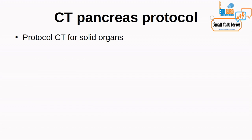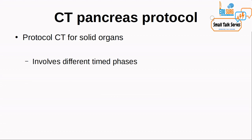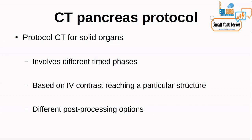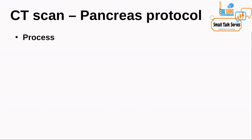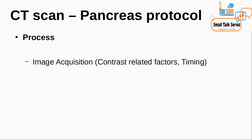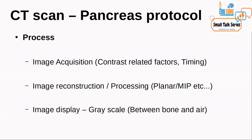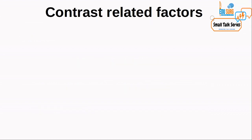When we say CT Pancreas Protocol, it is a protocol CT for solid organs. The basic principle is that it involves different timed phases — scan acquisition at different times based on the IV contrast reaching a particular structure — and it has different post-processing options. Commonly we have protocol CTs for liver and pancreas. For CT Pancreas Protocol image acquisition, we need to consider contrast-related factors, timing-related factors, image reconstruction, and image display.